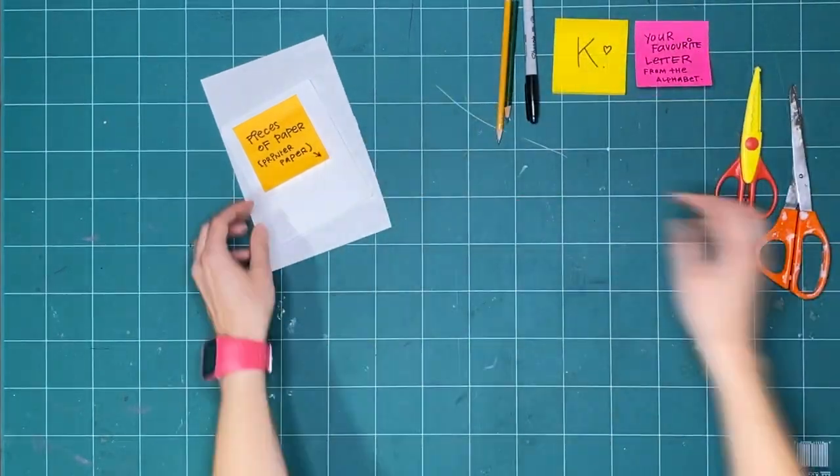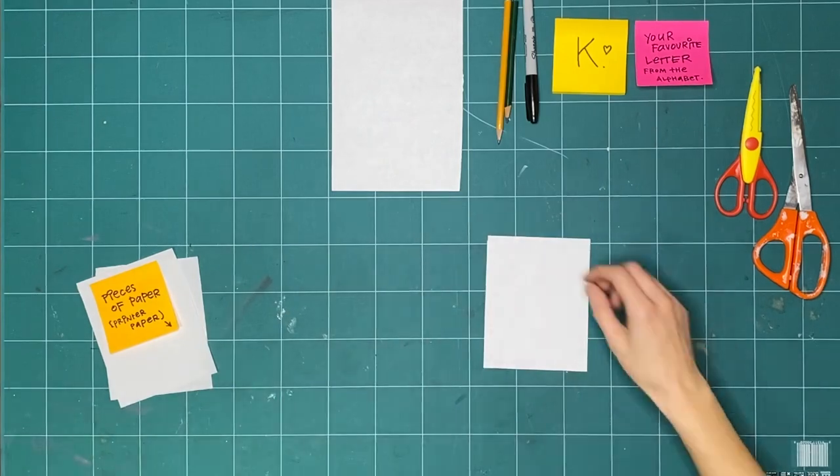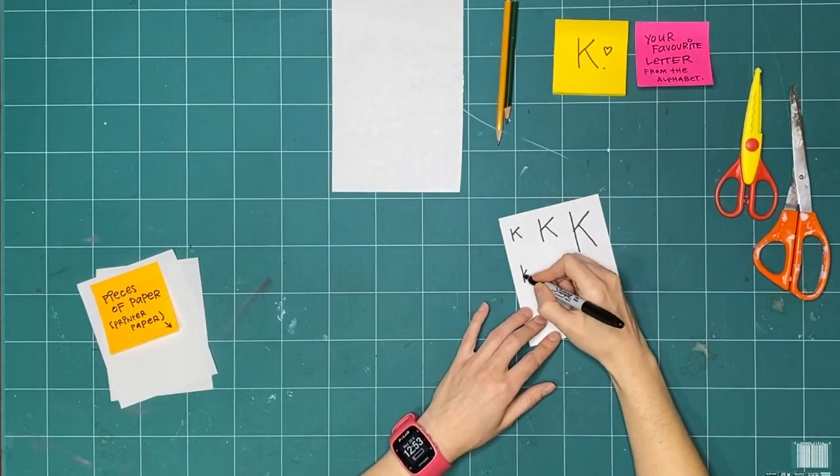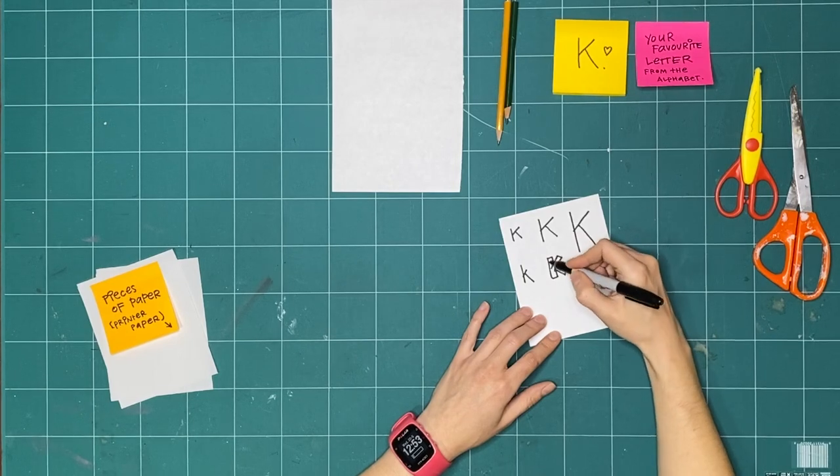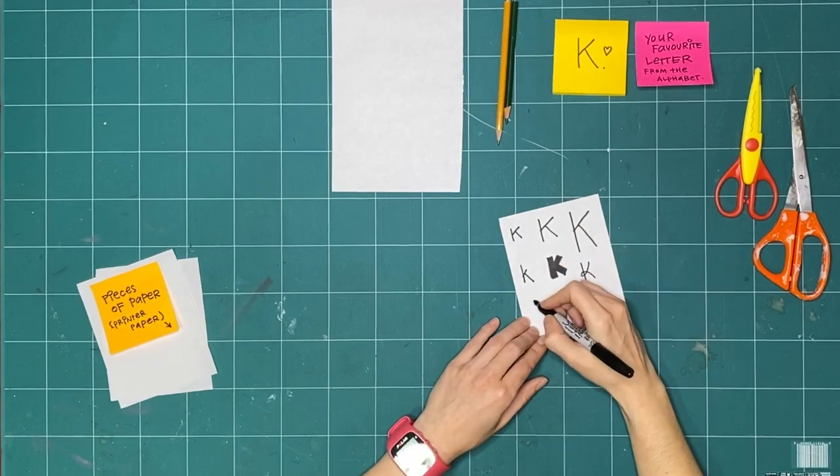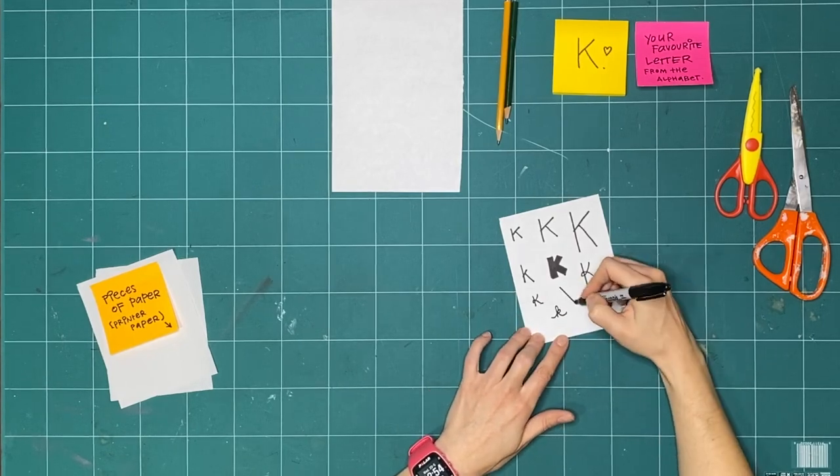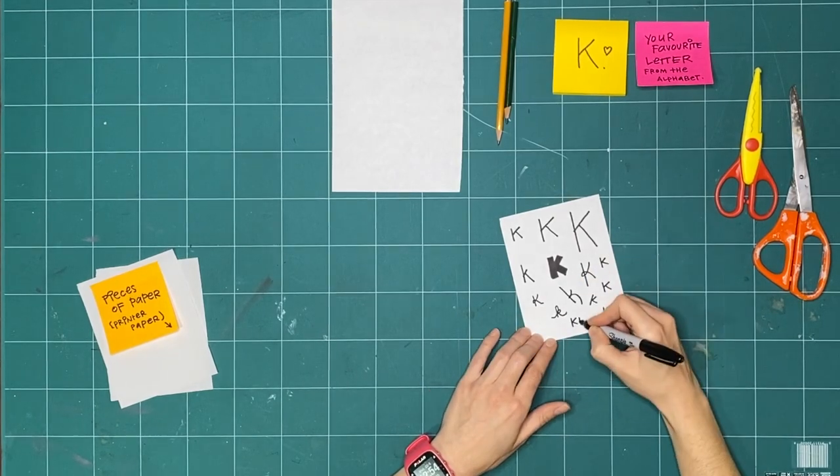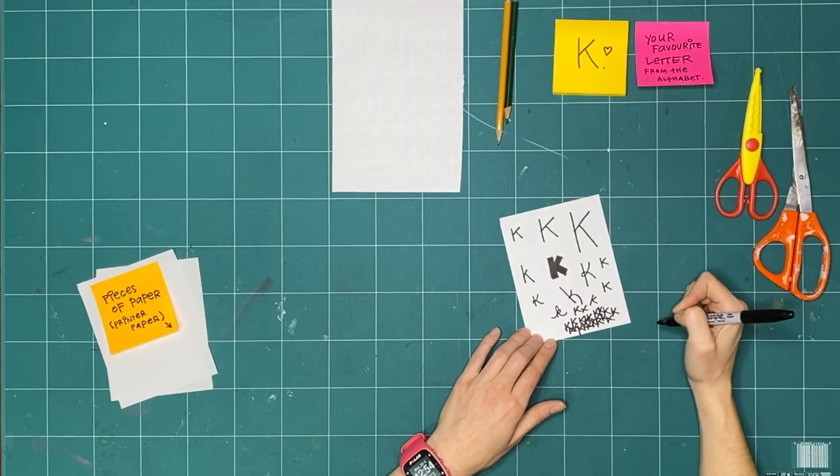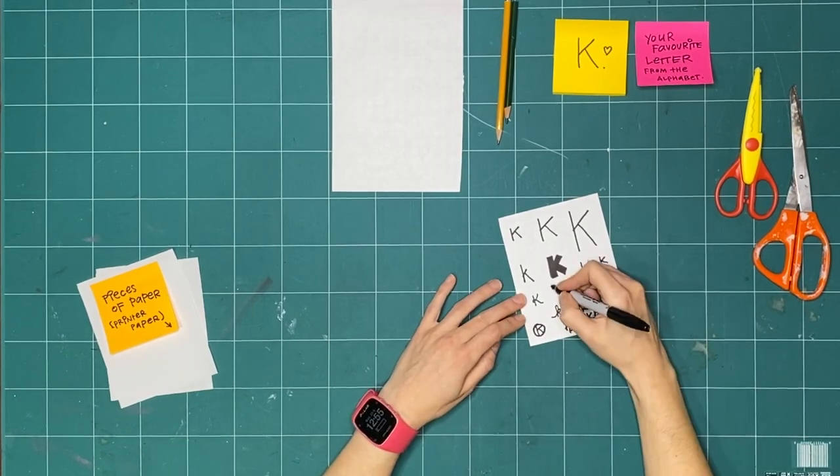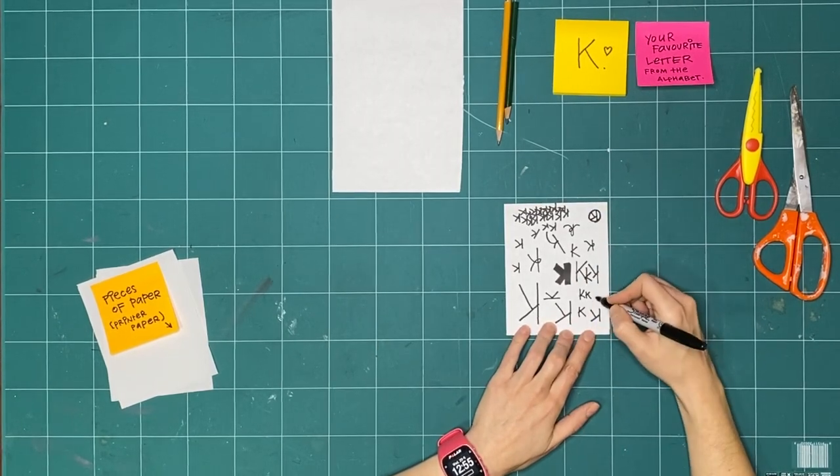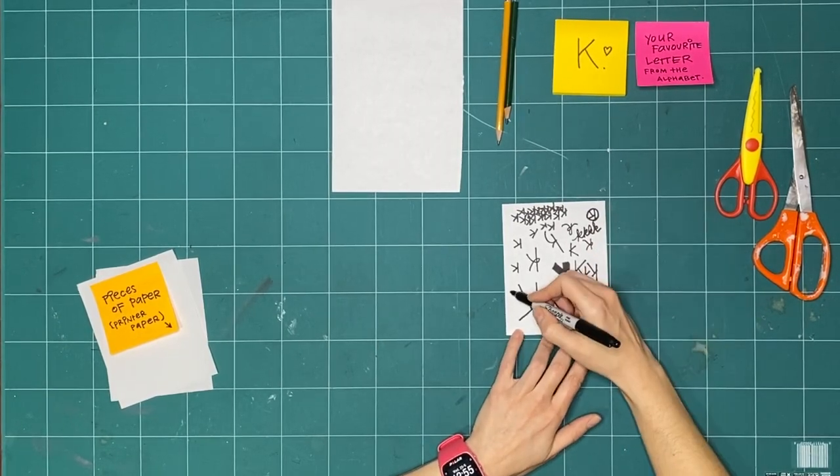Take one of the pieces of paper. Start writing your favorite letter. Don't think about it too much. Just start writing the letter over and over again. After you've done that a few times, try writing the letter a different way than you've already done. Try a different mark making tool or a different color. Try using the other hand or writing backwards. Try it any way you can think of. There's no right or wrong way to write your letter.